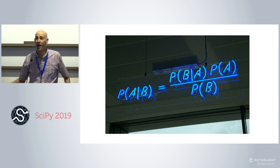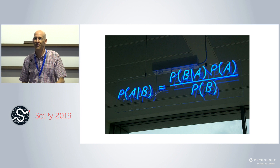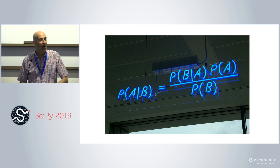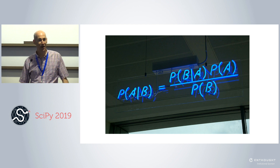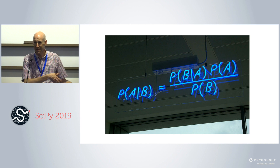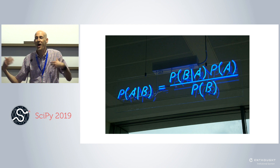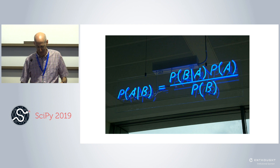By the way, there's a café in London that has a neon sign of Bayes' theorem. If you happen to be in London, you happen to go to that café, you happen to steal it and put it in the mail and send it to me — I would not object.